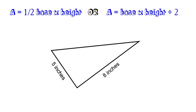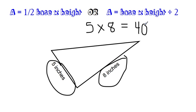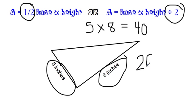Looking at the first example, we have half of the base times the height for our formula, which could also be base times height divided by 2. Here our base is 5 and our height is 8. So we multiply the base times the height: 5 times 8 equals 40. Now the second step — this is how it's different from parallelograms and rectangles — we divide by 2, or cut it in half. Half of 40 is 20, so our answer is 20 inches squared.